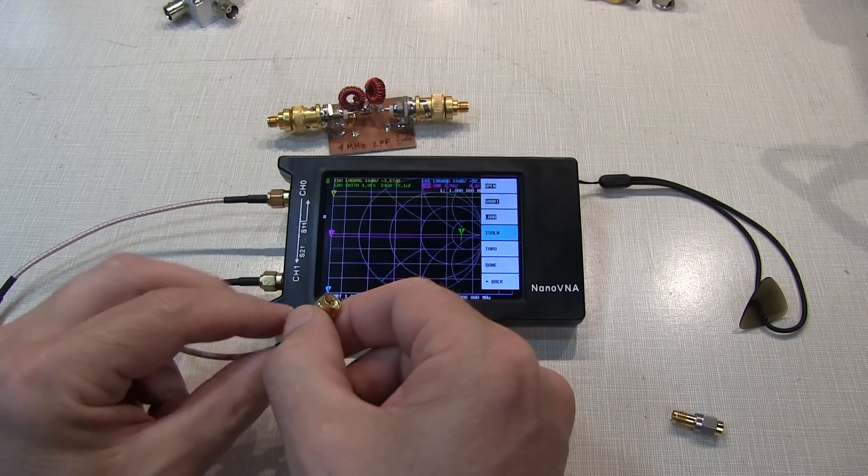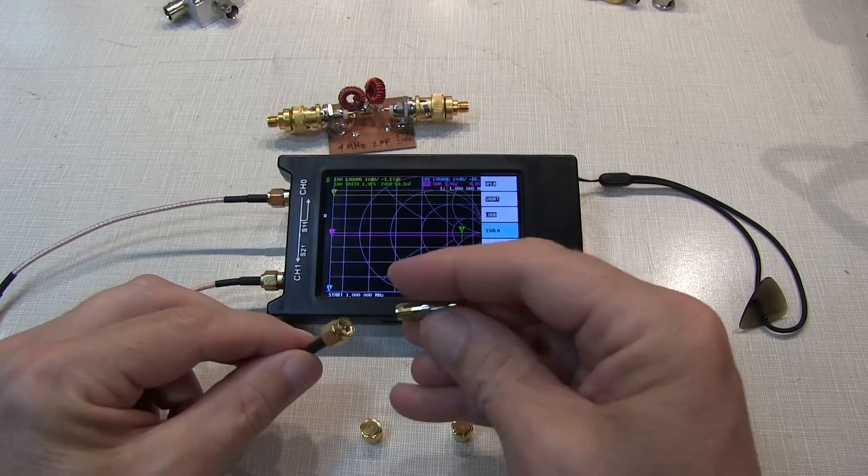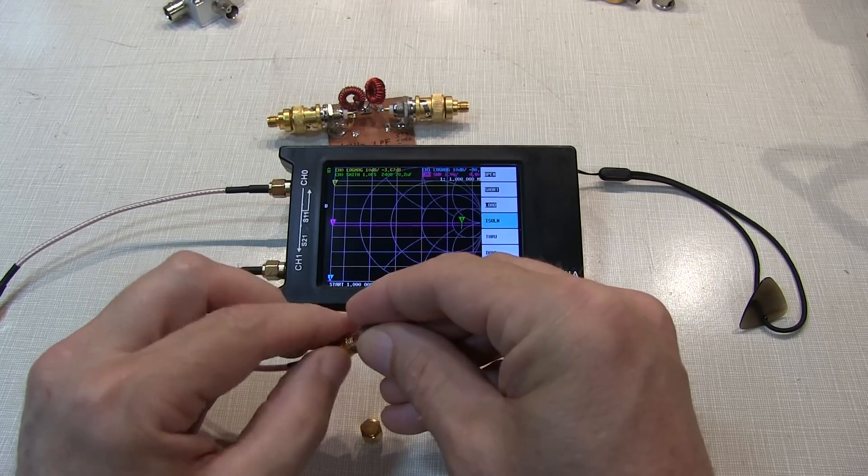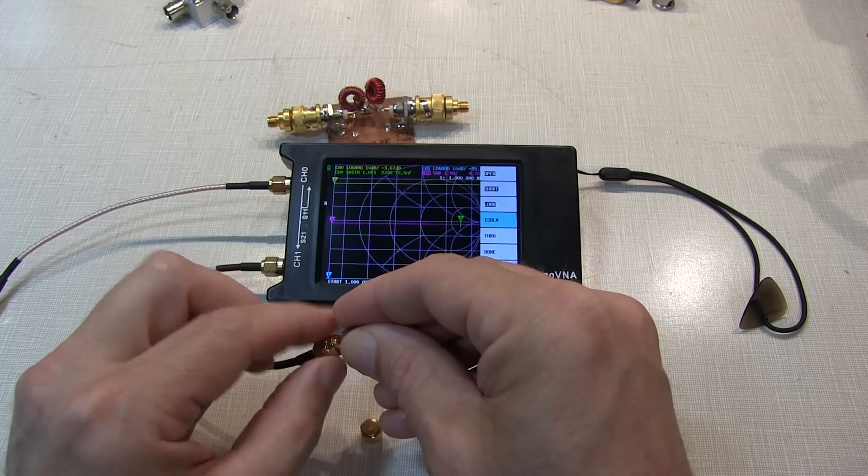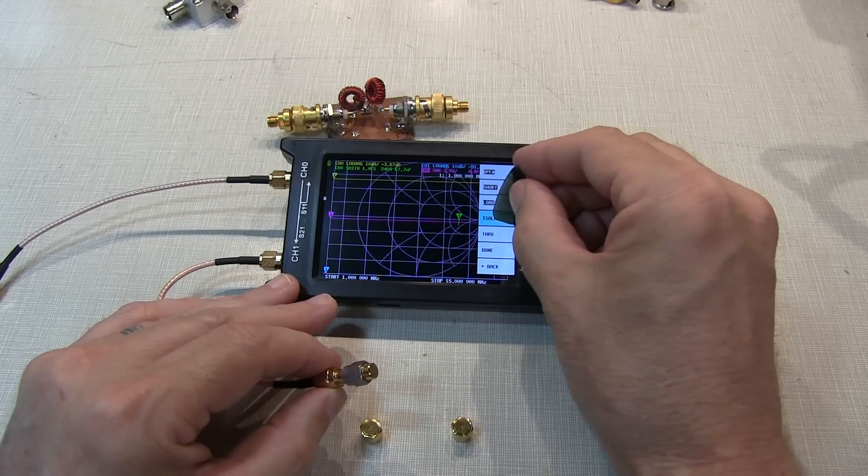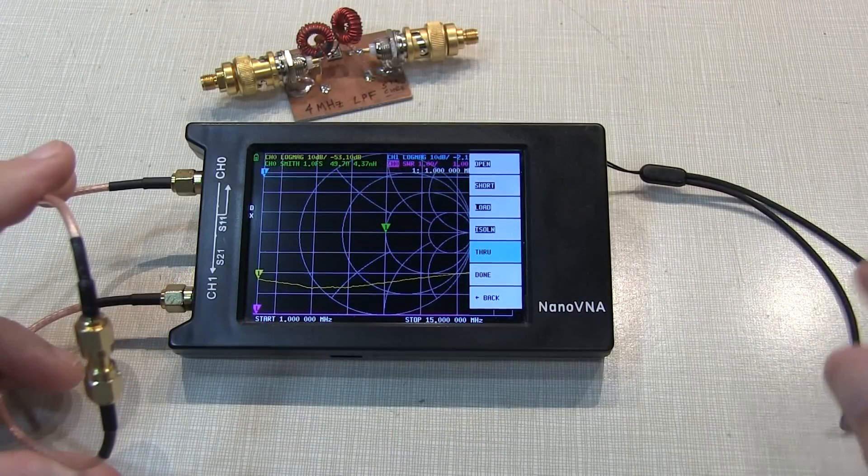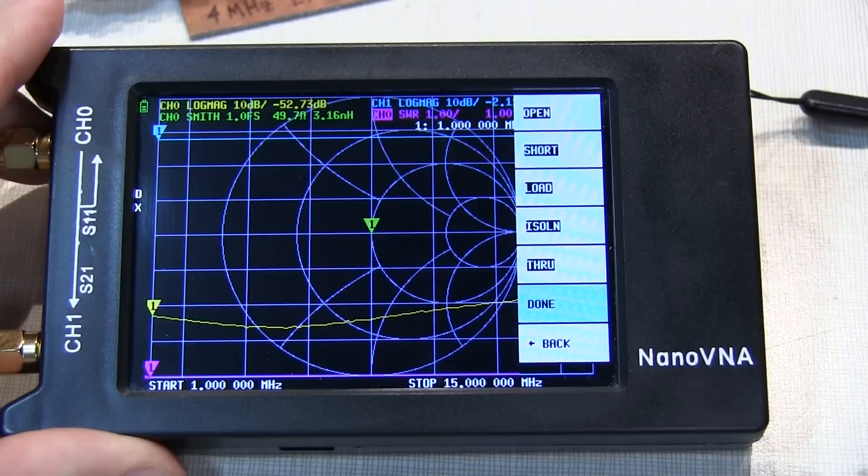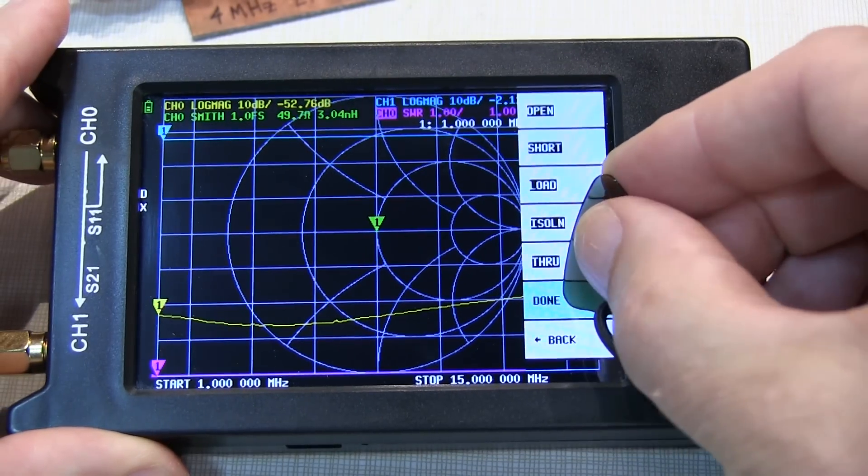Now for the isolation measurement, it's a good idea to terminate channel 1, or the input port, so I'm taking that 50 ohm load and the bullet and connecting it to the cable that's connected to channel 1, and then we can hit Isolation. And, of course, connect both cables together to do the through calibration. With all the calibrations done, we can hit Done.